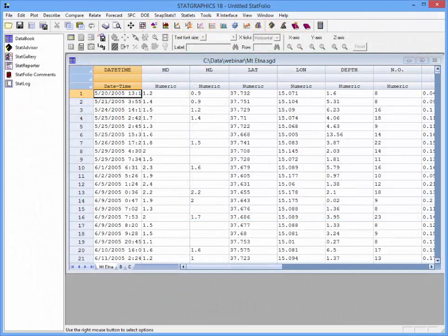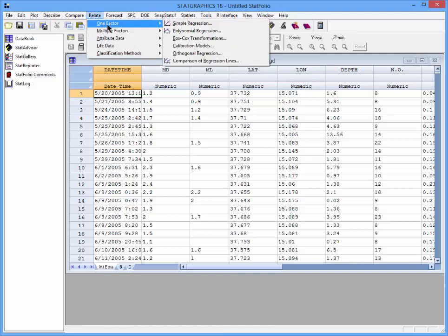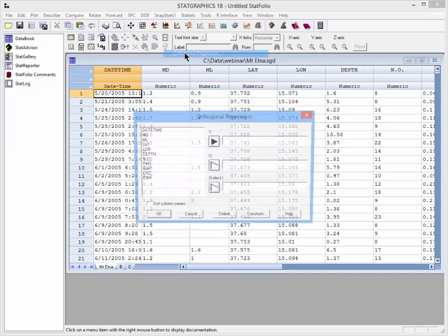I've loaded the seismographic data from Mount Etna into the StatGraphics 18 data sheet. To do an orthogonal regression, I'll go to Relate, One Factor, Orthogonal Regression.